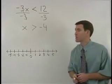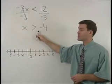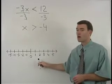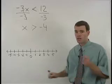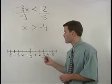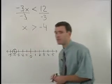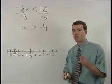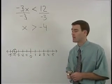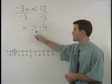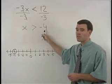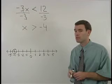Our next task is to graph x is greater than negative 4 on a number line. To do that, we start with an open dot at negative 4. The reason we use an open dot is that x is greater than negative 4 but is not equal to negative 4.